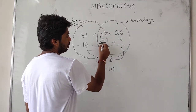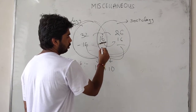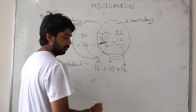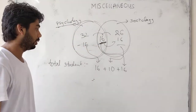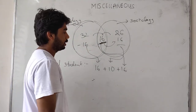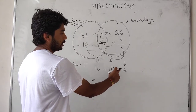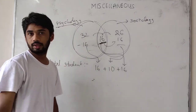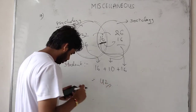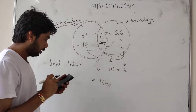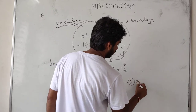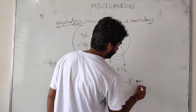So the total strength is: 16 (only physiology) plus 16 (both) plus 10 (only sociology) equals 42. So 42 is the total strength of the class. That is option number 3. In this way you have to solve this type of problem.